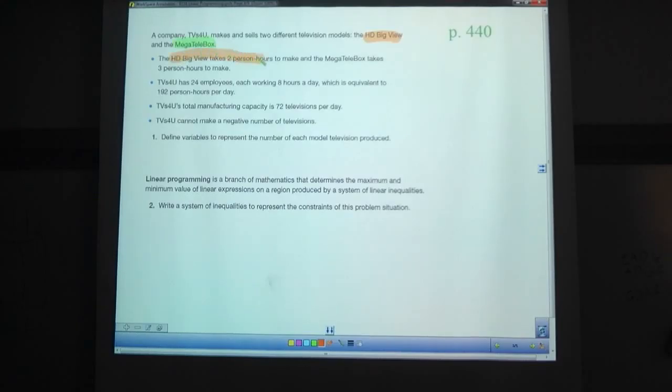The HD BigView takes two person hours to make. Person hours, that refers to the amount of time for one person to do it. So, two person hours, that'd be one person working for two hours. It could be two people working for one hour each. It could be four people working for a half hour each. The key thing is the number of people, or the amount of time added up among different people equals two hours. And the MegaTelebox takes three person hours to make. So again, that could be three people working one hour each, one person working for three hours. Maybe one person works two hours and another person works one hour. Maybe you have 30 people each working six minutes, I think. That adds up to three hours. The key thing is that it adds up to three hours.